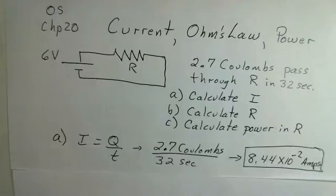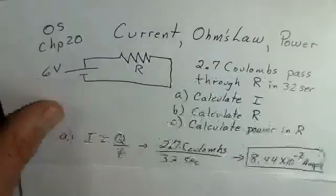Our definition of current is how much charge passes a specific point in what time interval. We've given those numbers directly. So 2.7 coulombs divided by the 32 seconds. The current is 8.44 times 10 to the minus 2 amps, or 84 milliamps. So that's the current value.